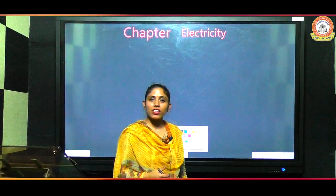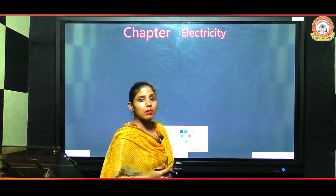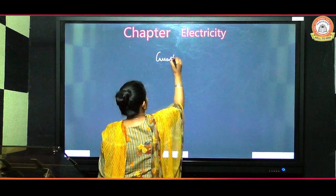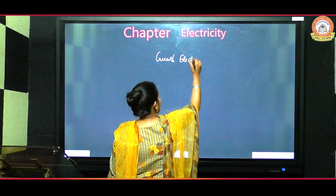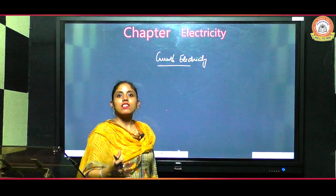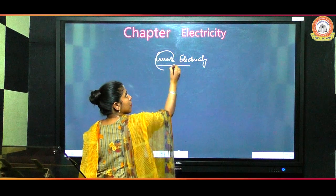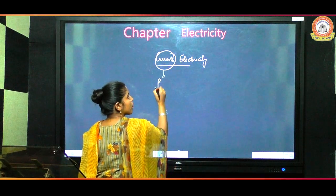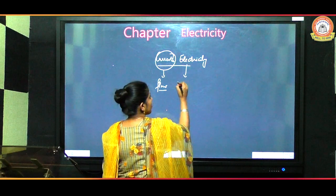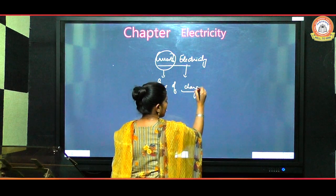Hello students, today we are going to start the chapter Electricity, also known as Current Electricity. You might have heard the word current, like ocean currents — current means there is a flow of something. In current electricity, there will be a flow of something, and that something is charge.